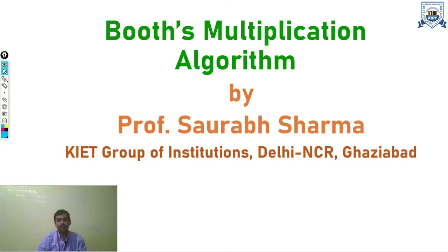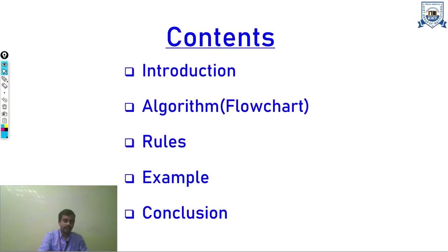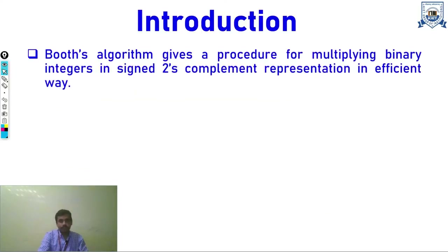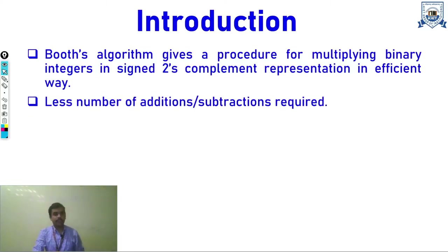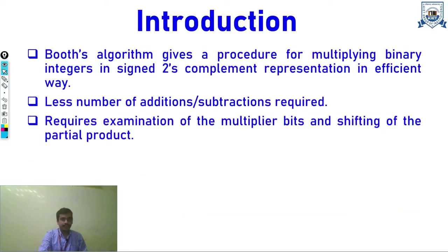In this video I will talk about Booth's Multiplication Algorithm. I will introduce some basic concepts, then the algorithm with the help of a flowchart and rules, and an example, then I will conclude. Booth's algorithm is a procedure for multiplying binary integers in two's complement representation. It is used because it requires fewer additions and subtractions, and it depends on bit examination and shifting of partial products.